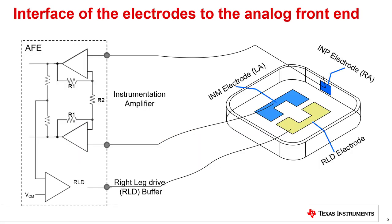The illustration depicts the connection of the electrodes on the smartwatch to the input circuitry of a TI analog front end. Three electrodes are shown, labeled LA for left arm, RA for right arm, and RLD for right leg drive. These terminologies are carried over from naming conventions in a clinical ECG system. The illustration shows the LA and RLD electrodes in contact with the user's left wrist and the RA electrode on the side of the watch.